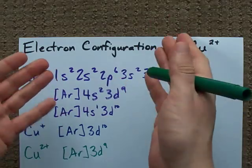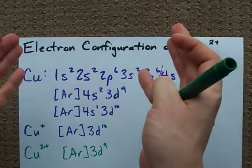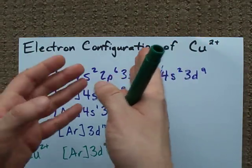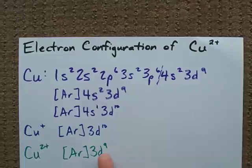is something called the Jahn-Teller effect, which you're not responsible for. All you're responsible to know is that when you're removing electrons from atoms, you remove them from the highest n first.